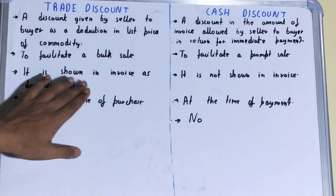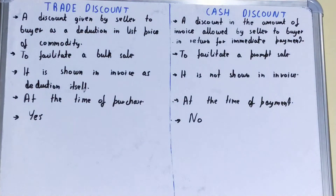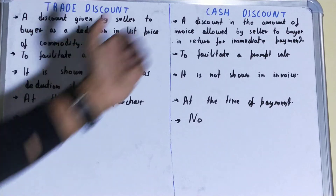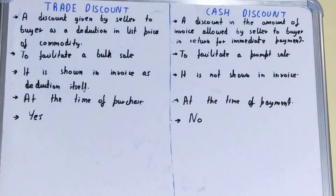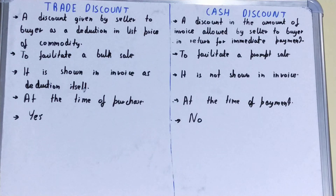If we talk about the invoice, trade discount is shown in the invoice in the form of a deduction from the listed price. But in the case of cash discount, it is not shown in the invoice — the invoice price or list price is only reduced.